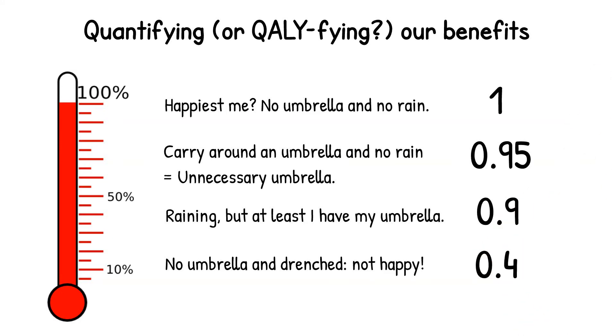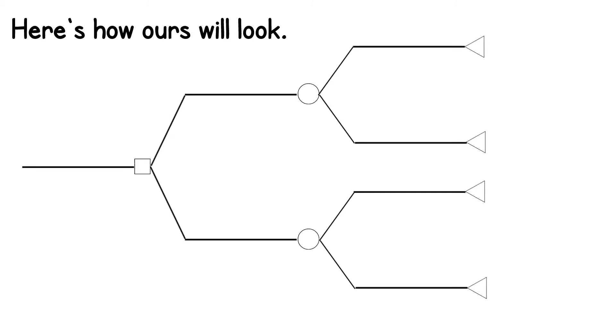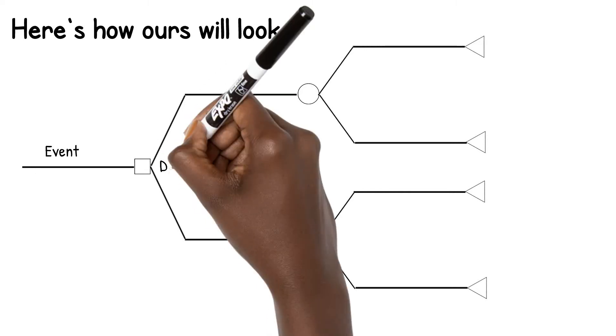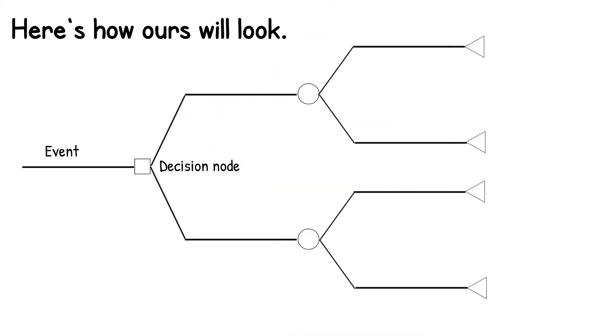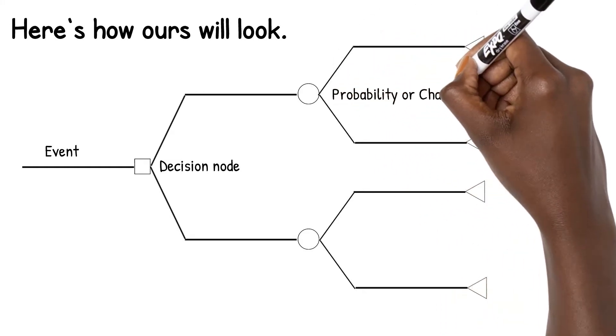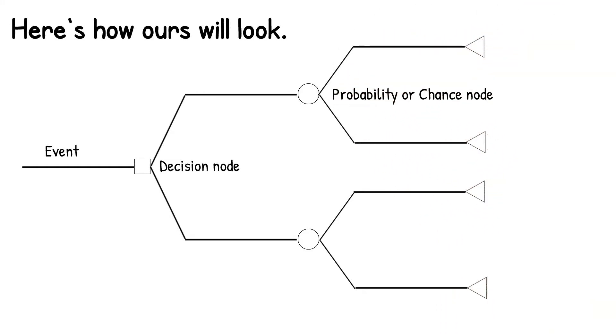So here I'm going to give you in advance the scaffolding of how our decision analysis will look so we can go through the parts themselves. Starting with the horizontal lines, each of these corresponds to an event. The events then lead into these shapes called nodes, which will then branch, and the kind of branching and shape depends on what kind of node it is. The square represents a decision node, meaning we're making a decision at it. The circles are probability or chance nodes. And finally, at the end of every terminal branch of the tree is a terminal node.